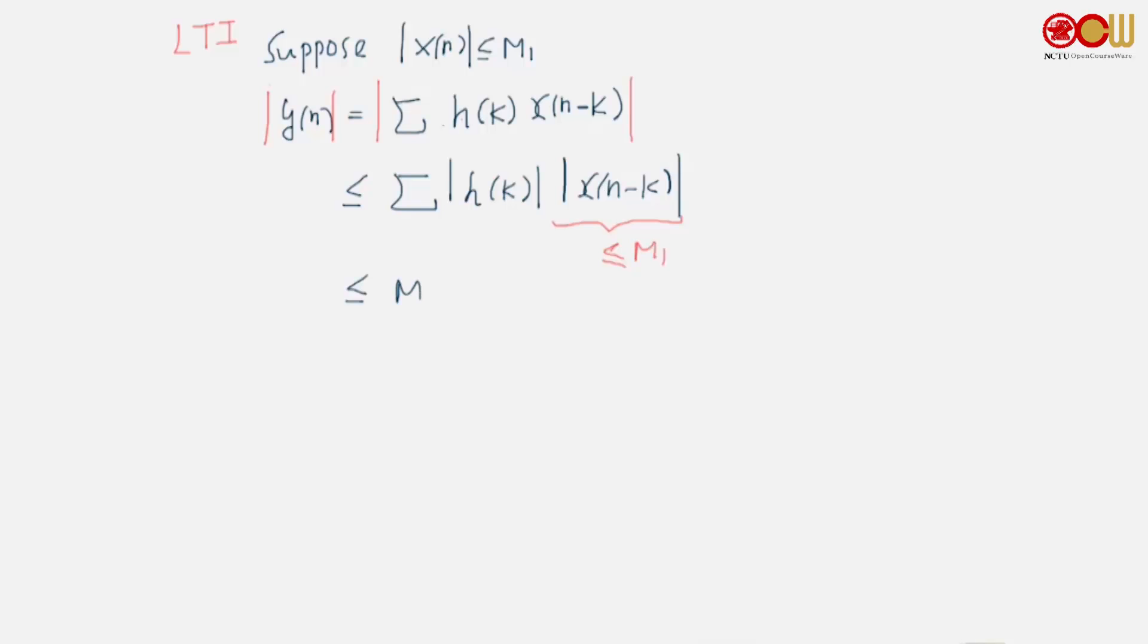Let's look at some examples and see whether or not the system is stable. For example, the rectangular window that we have seen before, h(n) is like this. Will this be stable? Indeed, it is stable because it has only finitely many non-zero terms, so it's absolutely summable.